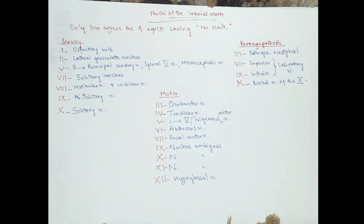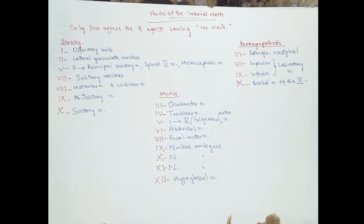That is it about the cranial nerves, whether they're sensory, motor, parasympathetic, and their names of the nuclei and the number and the types. So let's go over where they are situated. The olfactory bulb is not in the brainstem. If you remember, I've told you that one and two are not in the brainstem. The lateral geniculate is in the thalamus, in the diencephalon.